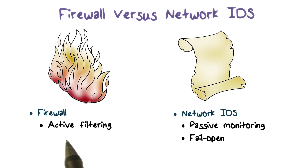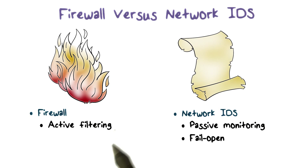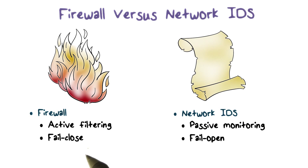On the other hand, a firewall performs active filtering. That is, all traffic must pass through the firewall, and the firewall performs relatively simpler and more efficient analysis. However, it can still be overloaded by a large volume of traffic. When this happens, it will simply not let the traffic go through. We call this 'fail closed,' meaning that when a firewall fails, the internal network is closed to the external network, and it is safe.